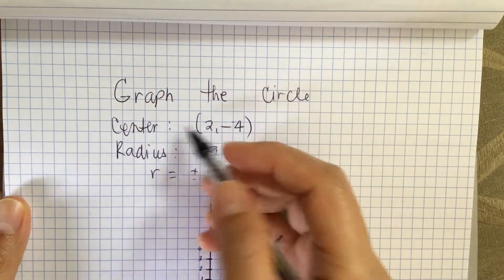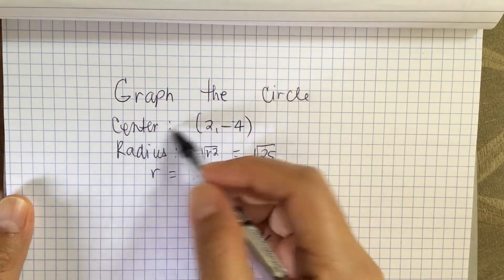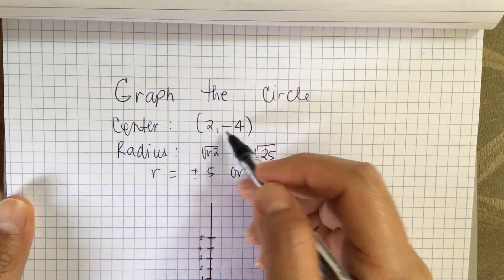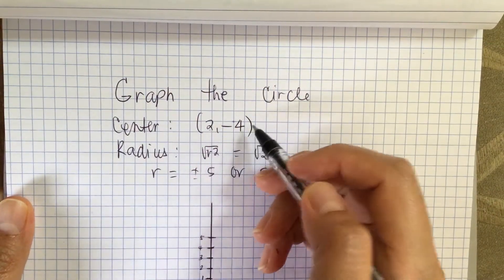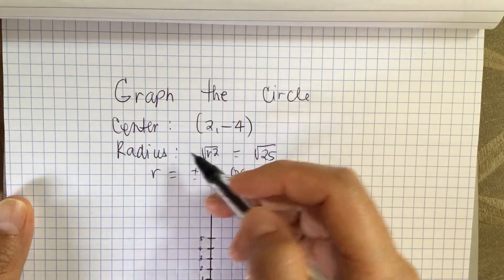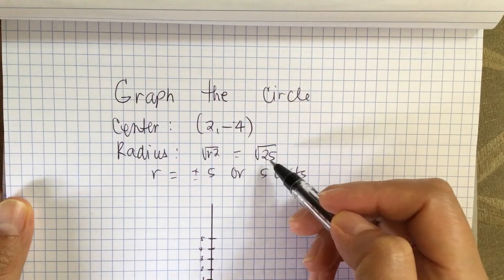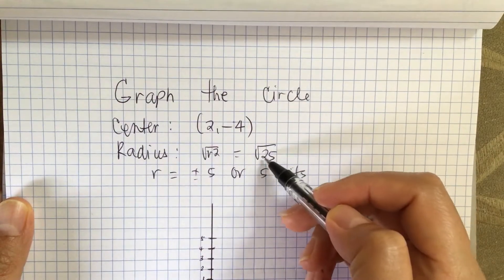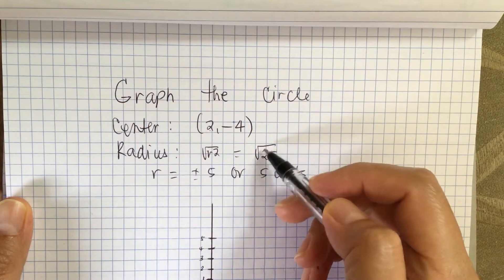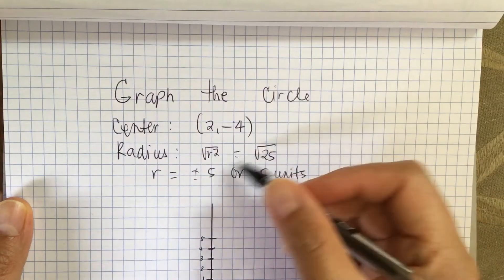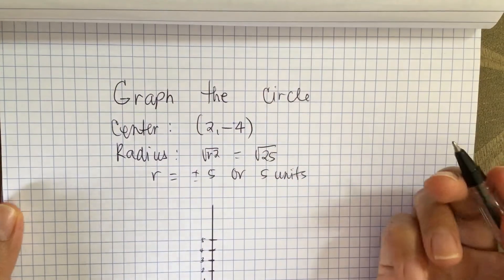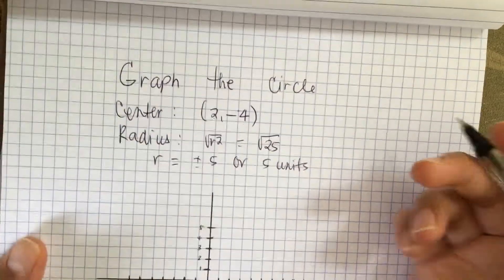Graph the circle. The center is at (2, negative 4) and the radius r is equal to the square root of 25, which equals 5.